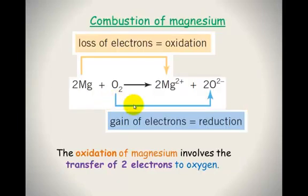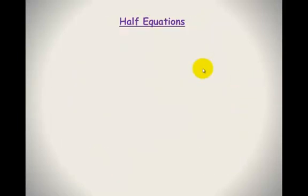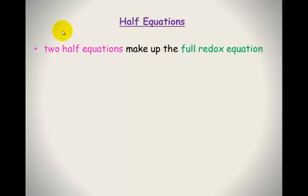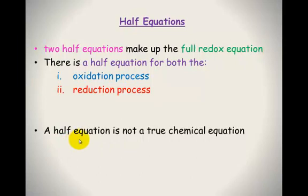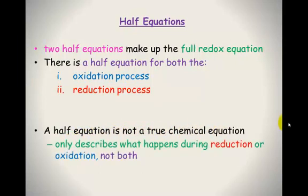When looking at a reaction, we need to break it down into the half reactions — the oxidation and the reduction half reactions. It makes it a lot simpler to look at redox reactions that way. Two half equations make up the full redox equation. There is a half equation for both the oxidation process and the reduction process. A half equation is not a true chemical equation — it only shows half of what is happening, either the reduction half or the oxidation half, not both sides.